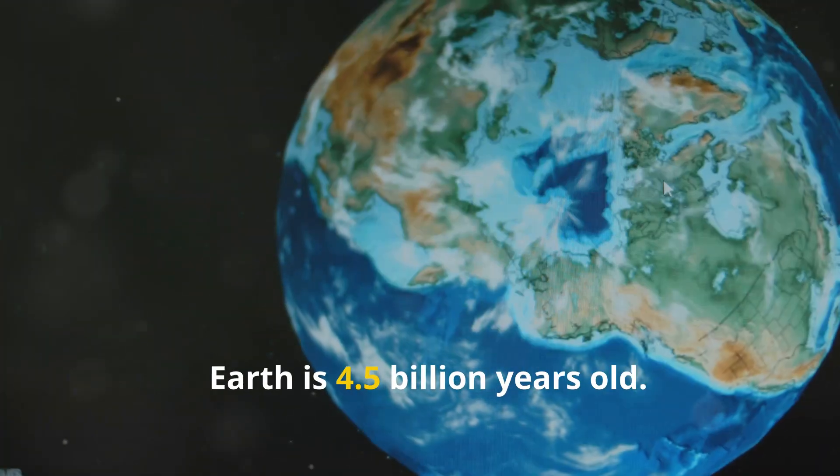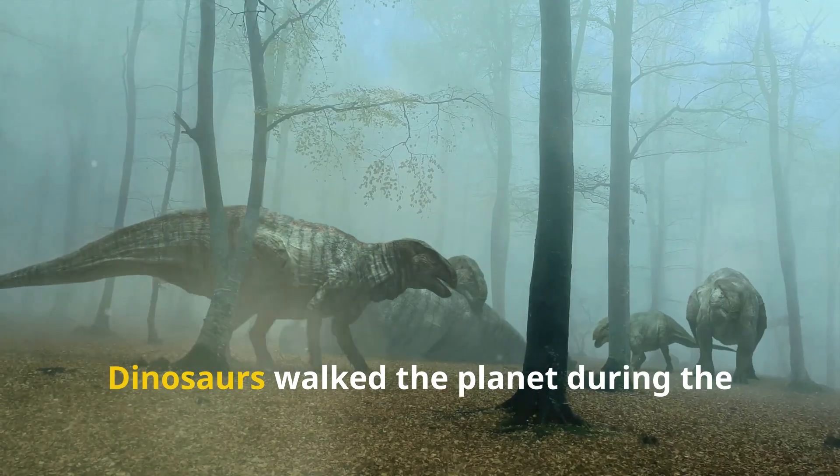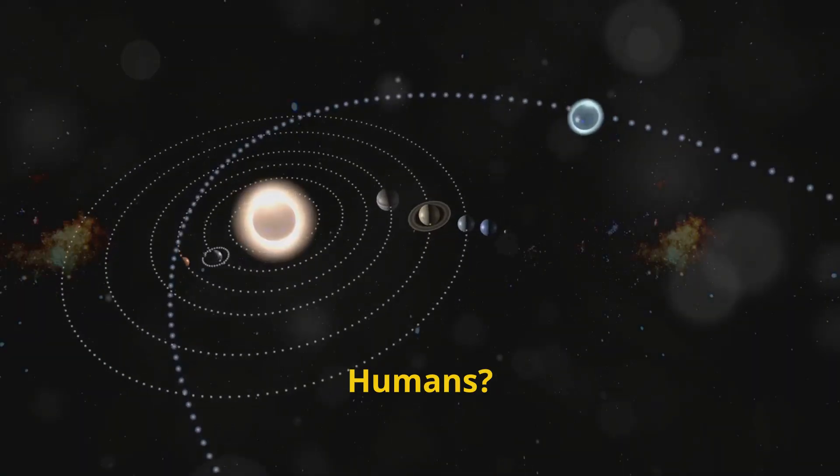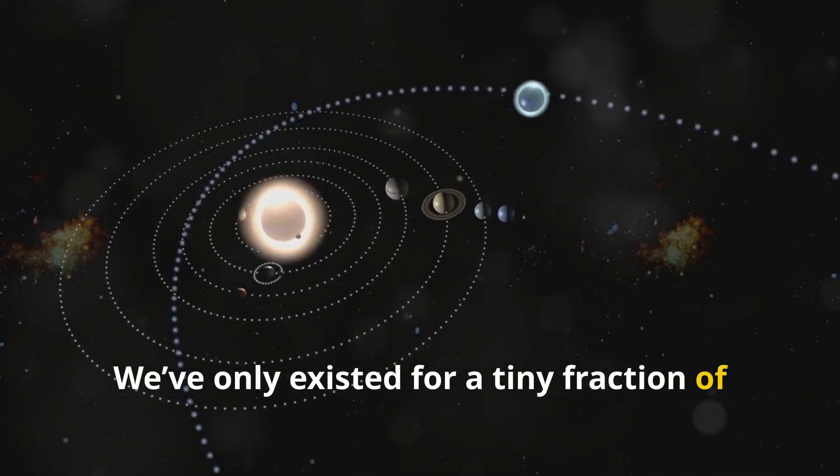Earth is 4.5 billion years old. Dinosaurs walked the planet during the sun's 19th or 20th orbit. Humans, we've only existed for a tiny fraction of a single orbit.